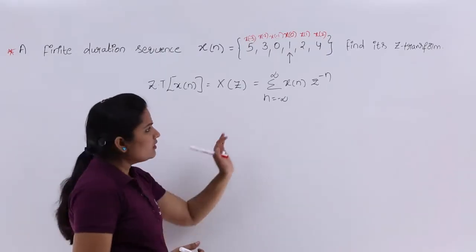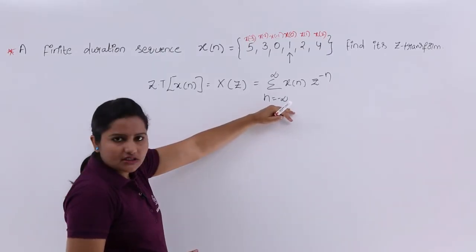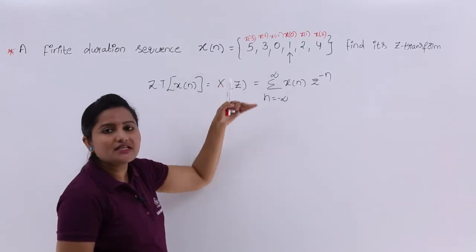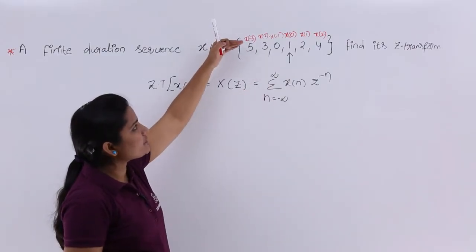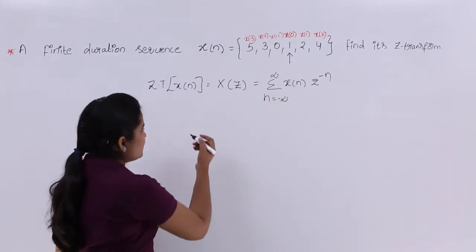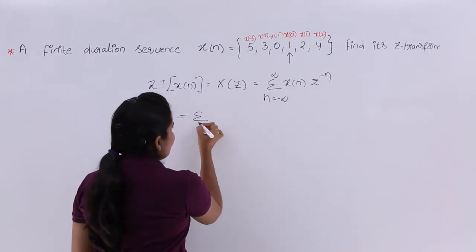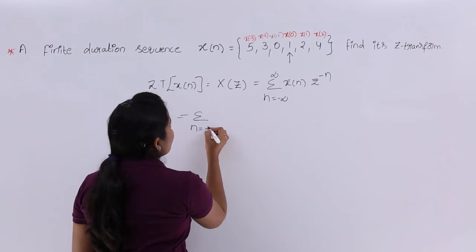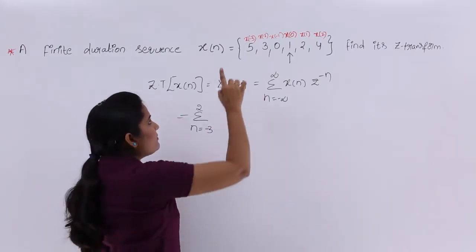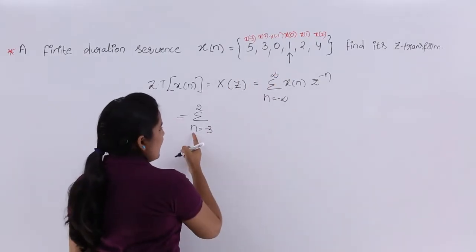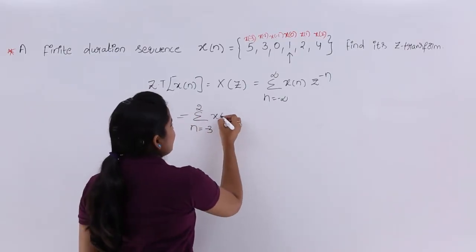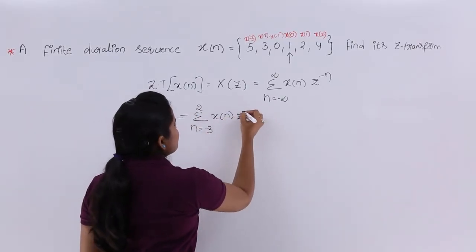If you observe this summation, it covers minus infinity to infinity. But our signal is a finite duration signal having values only from n equals minus 3 to 2. So there is no need to consider from minus infinity to infinity. I am considering the Z-transform summation from n equals minus 3 to 2, as the signal has samples only in that range. The remaining equation is X of n into Z power minus n.